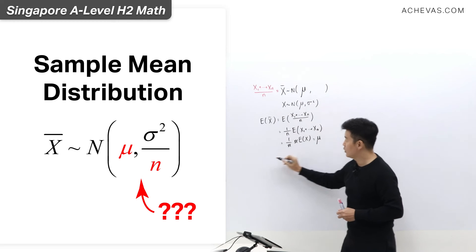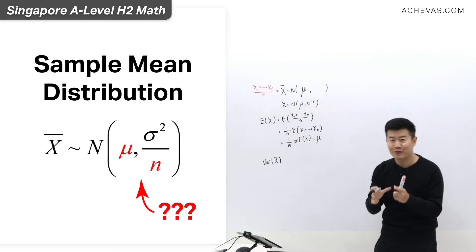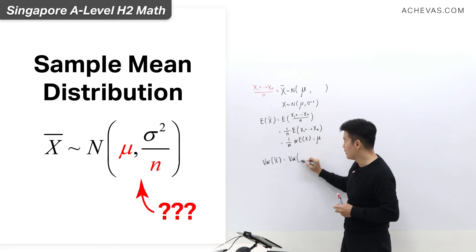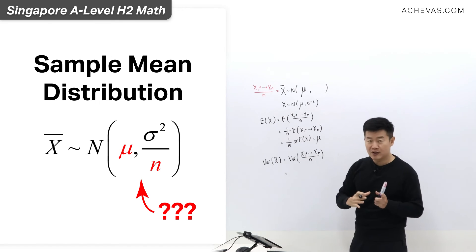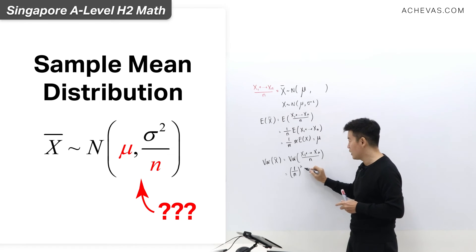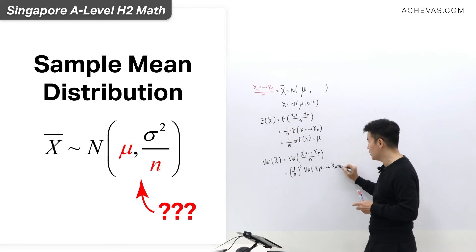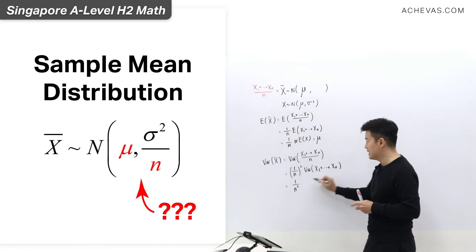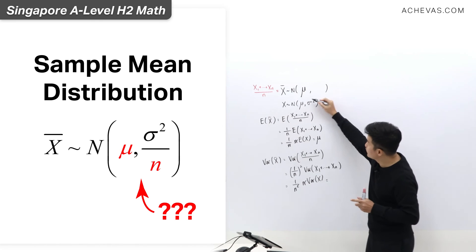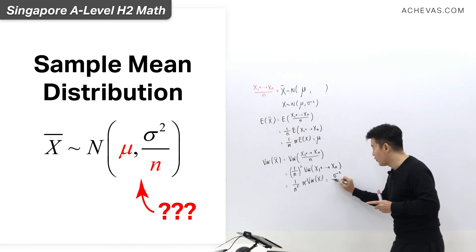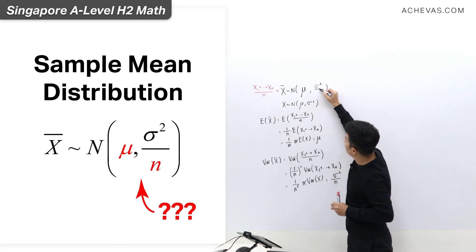Now we can fill up this space. Let's find the variance of x-bar and understand why there is a division by n. The variance of x-bar is the variance of (x1 plus x2 plus x3 all the way until xn) divided by n. Shifting the constant 1 over n out of the variance notation gives 1 over n squared, leaving us with the variance of x1 plus x2 plus ... plus xn. That equals 1 over n squared times n times the variance of x. The n's cancel, and we are left with sigma squared over n. This explains why the variance of x-bar is sigma squared over n.